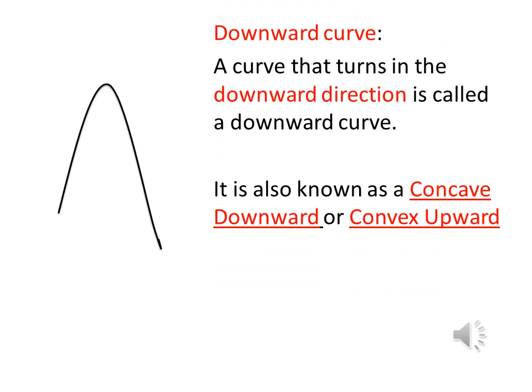The second type is a downward curve — a curve that turns in the downward direction. It is simply the opposite of an upward curve and is also called concave downwards or convex upwards.